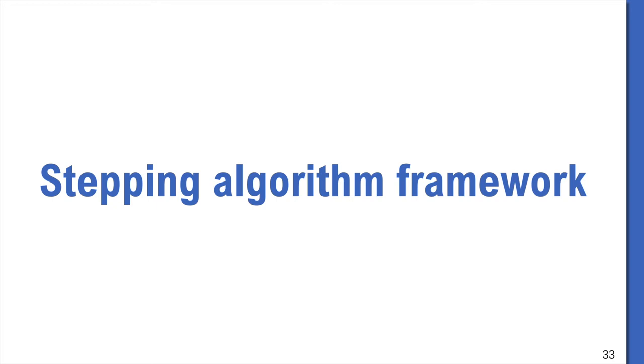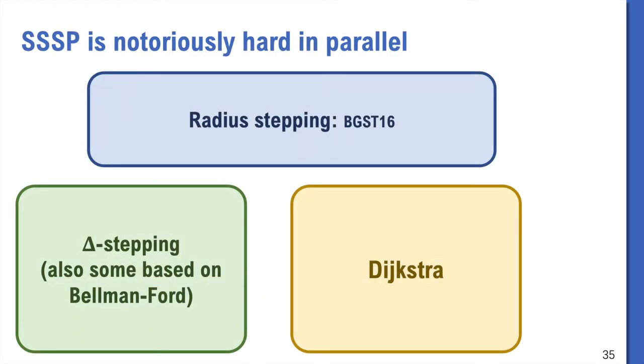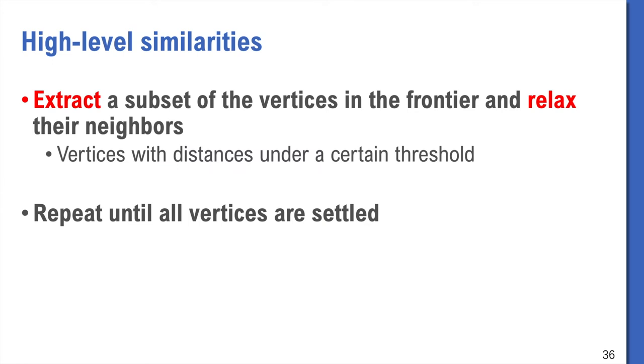I first talk about Stepping algorithm framework. We try to abstract some common ideas in these existing algorithms, and call them Stepping algorithms. Just like Delta-stepping, these algorithms run in steps. In each step, a subset of unsettled vertices with distances under a certain threshold are extracted. And we use them to relax their neighbors, repeat it until all vertices are settled.